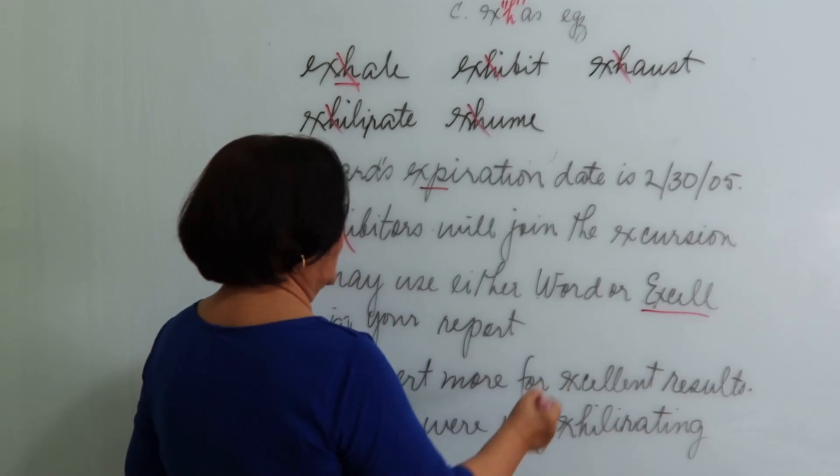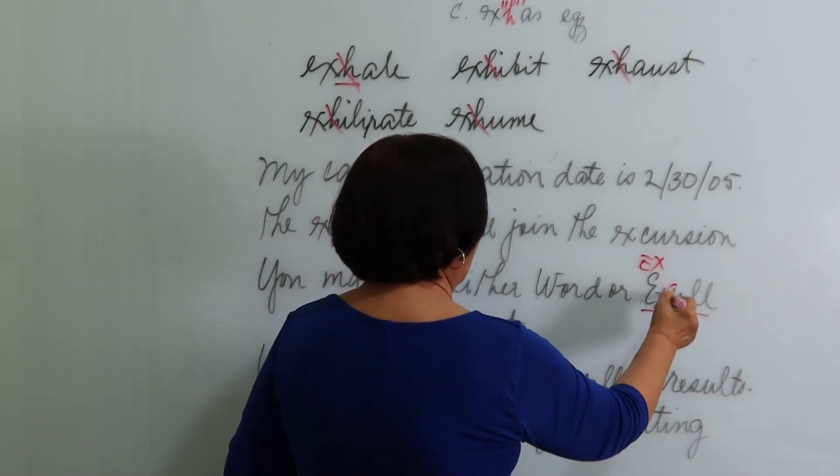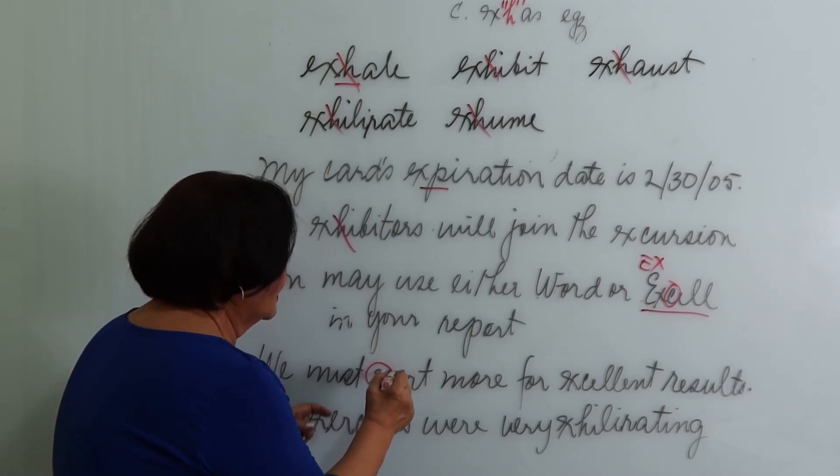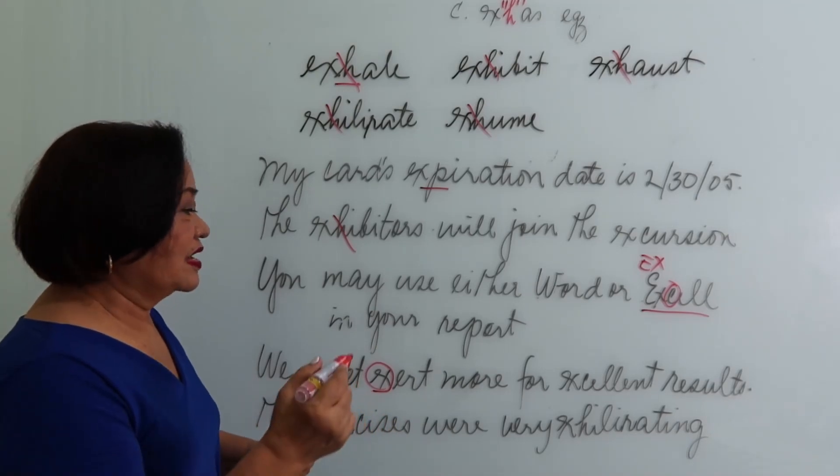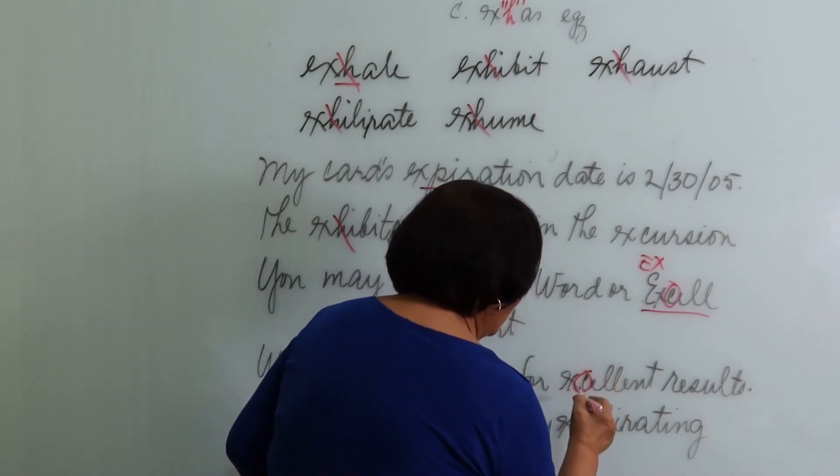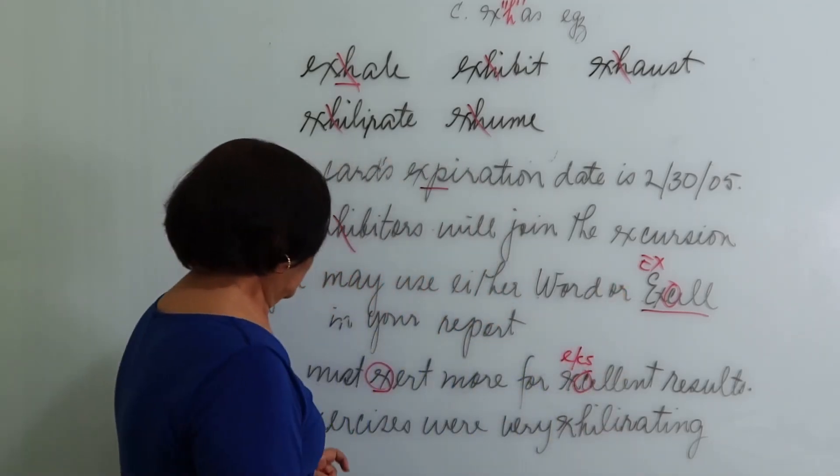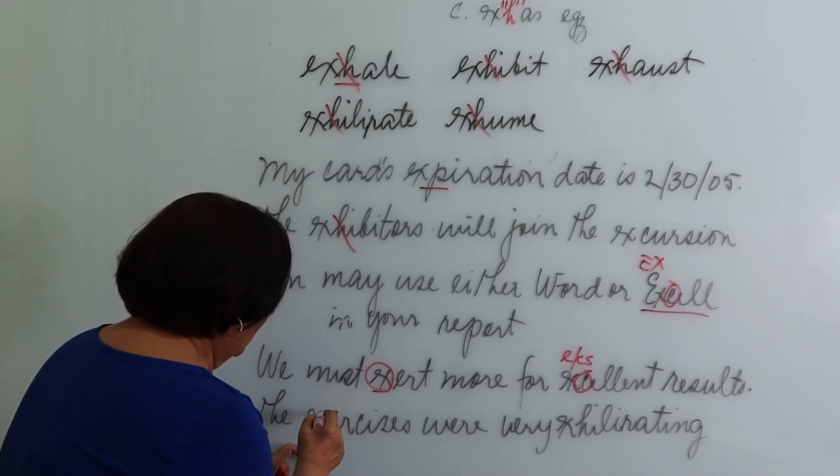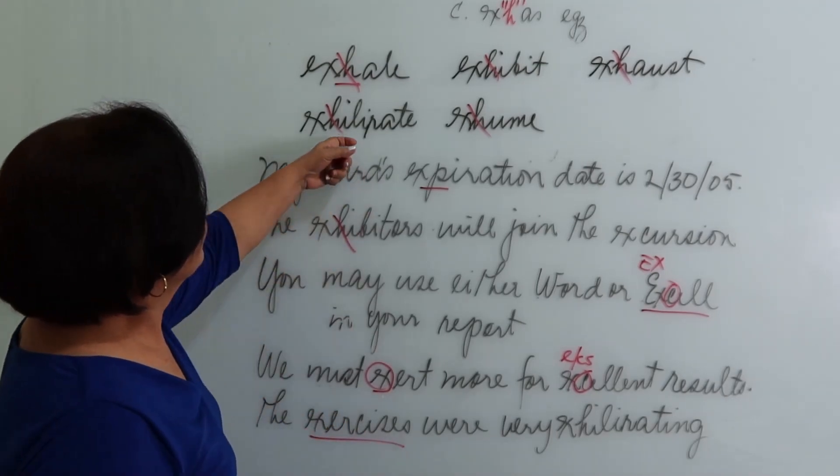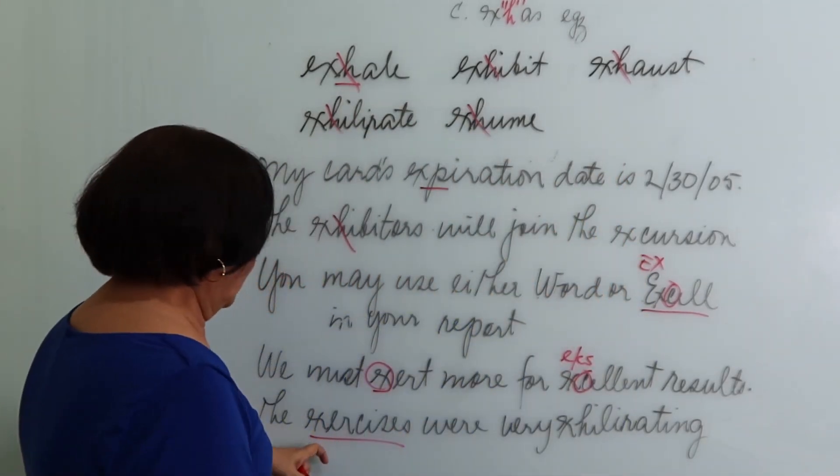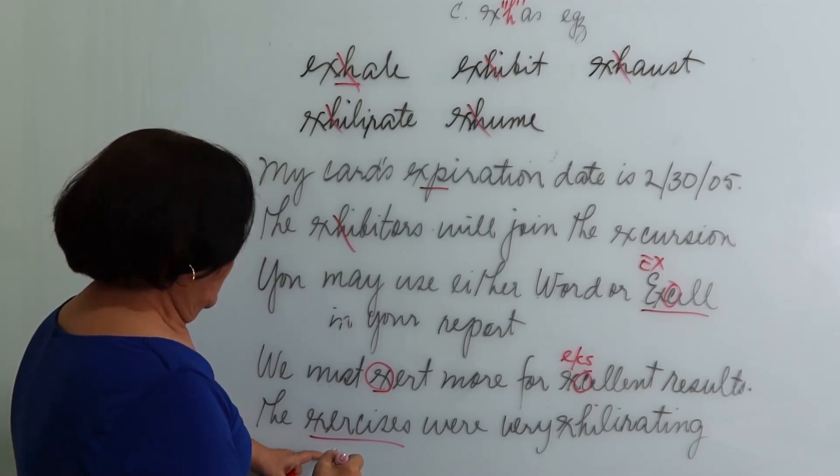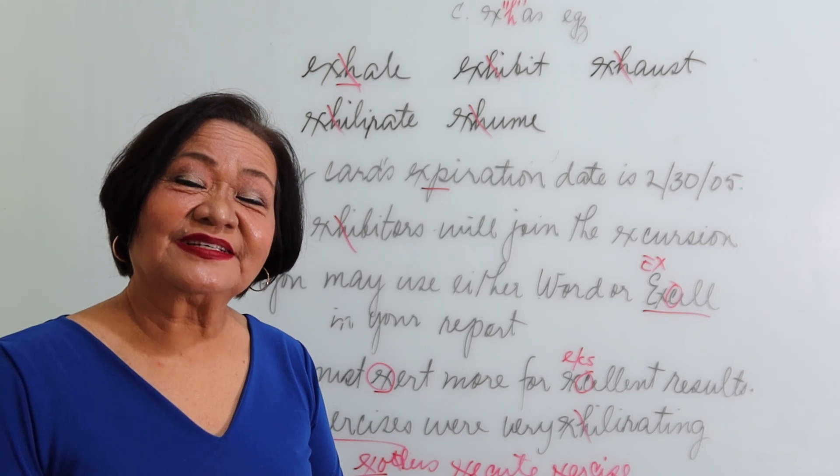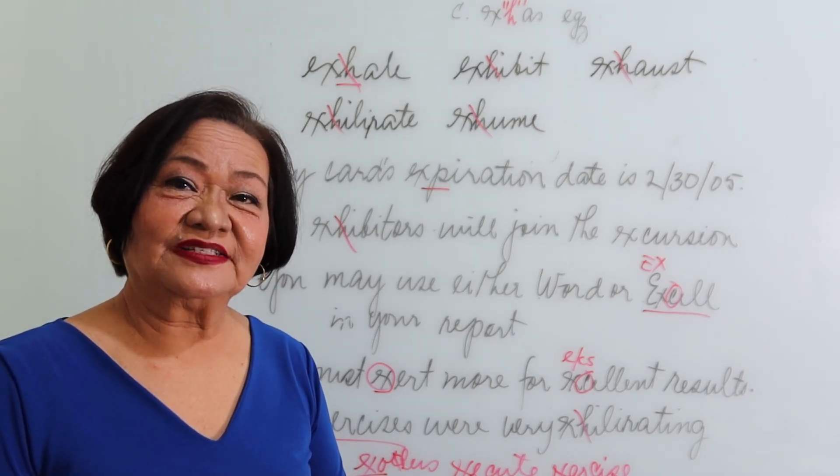Excel in your report, so this is an X because it's followed by a consonant. We must, egg, this becomes egg because of the vowel following it. We must exert more for excellent results. So followed by a consonant, this becomes X. We must exert more for excellent results. The exercises, remember this is an exception. So we have exercises were very exhilarating. Drop the H. If you enjoyed our video, please like, subscribe, and share our channel and feel free to give us a comment so we can grow more in this particular project.